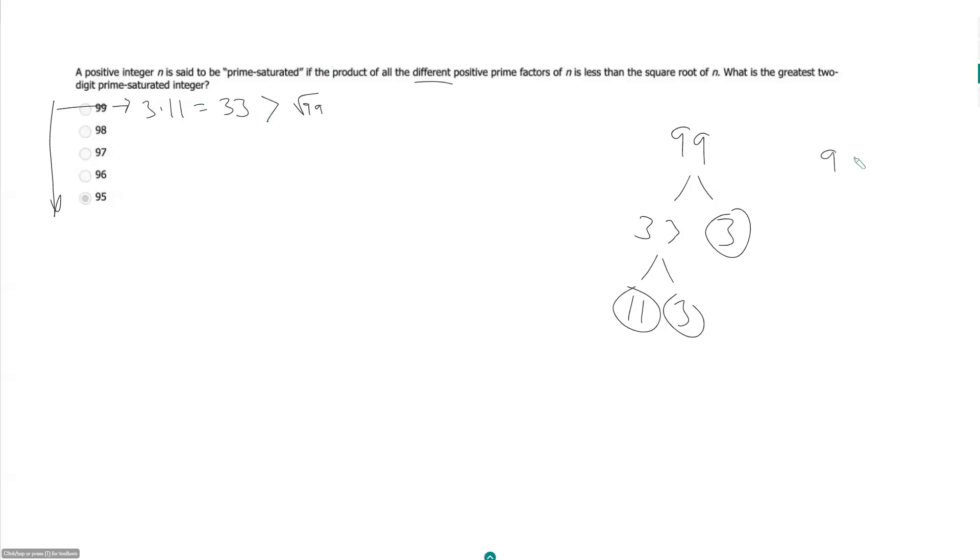98, what does that become? So that is 49 times 2, which gives us two 7's and a 2. We only get to count one of those 7's though. So the product of our different prime factors here is 2 times 7, which is 14. And again, 14 should be greater than the square root of 98. So this guy is not prime saturated.